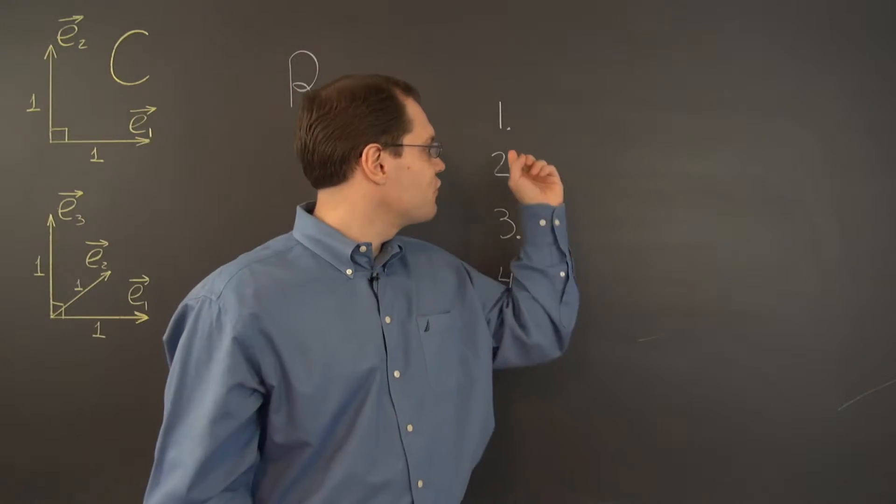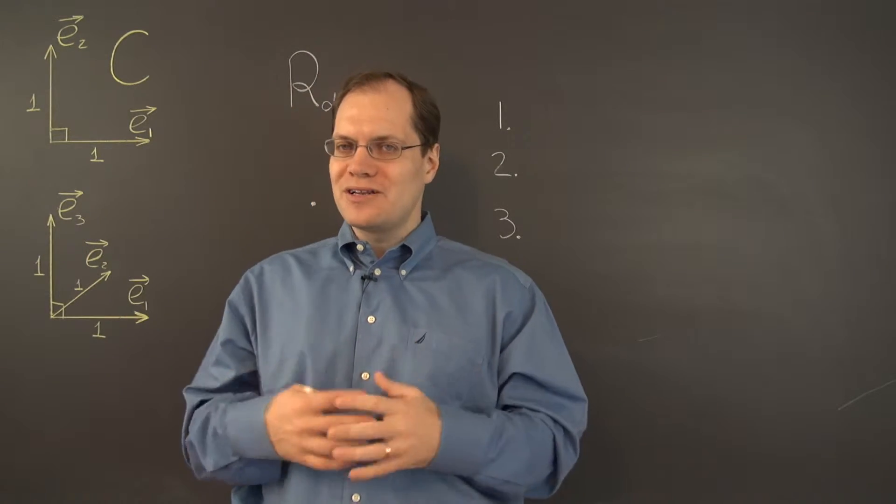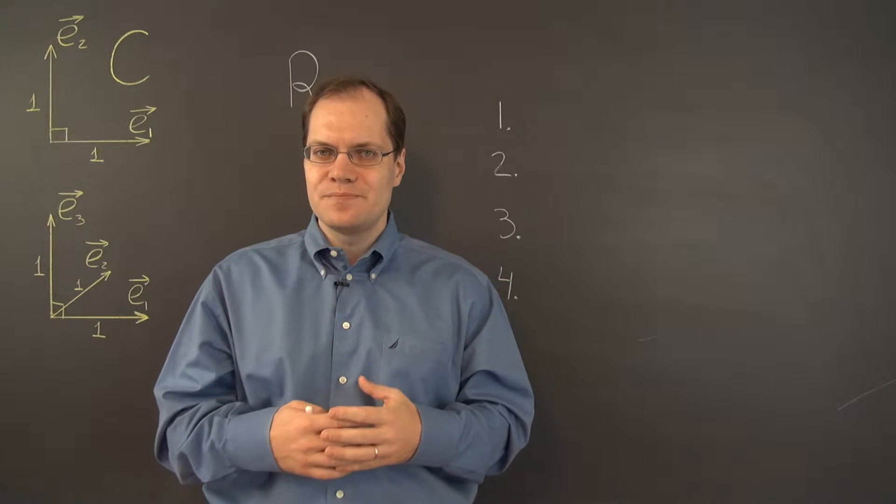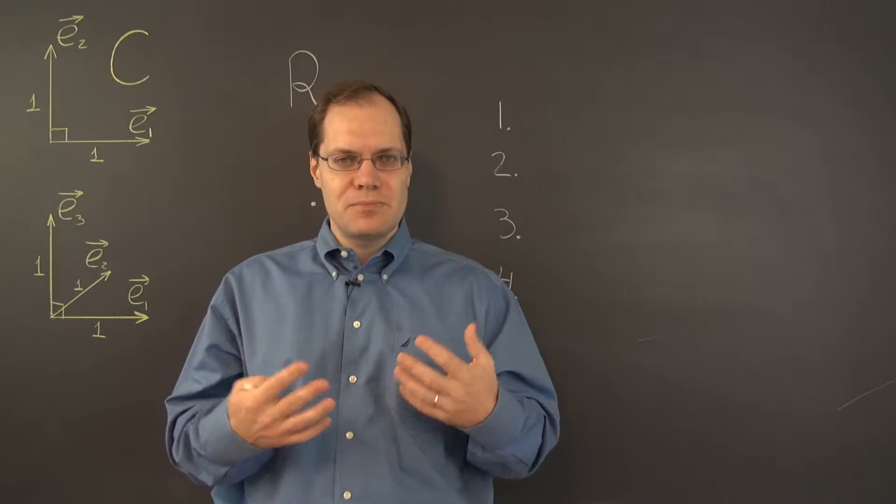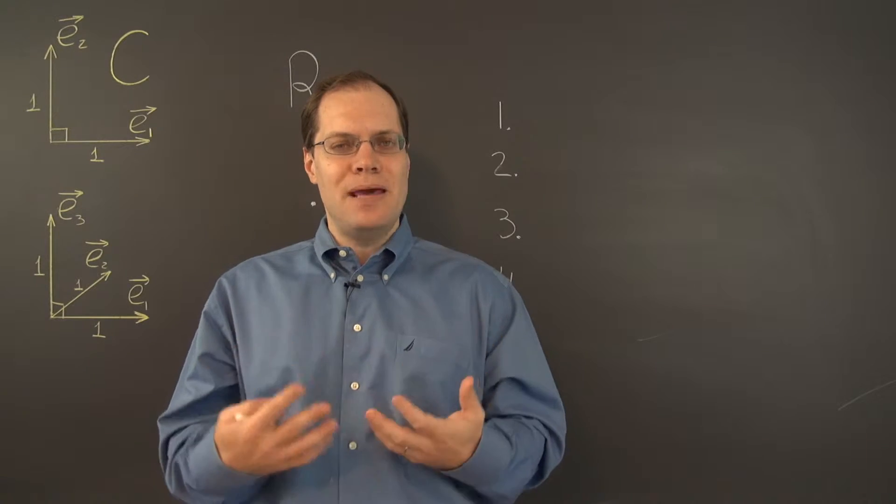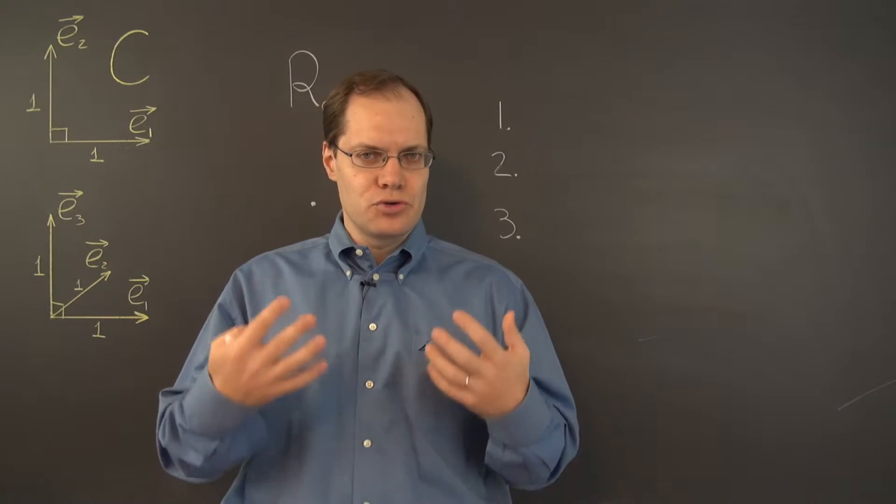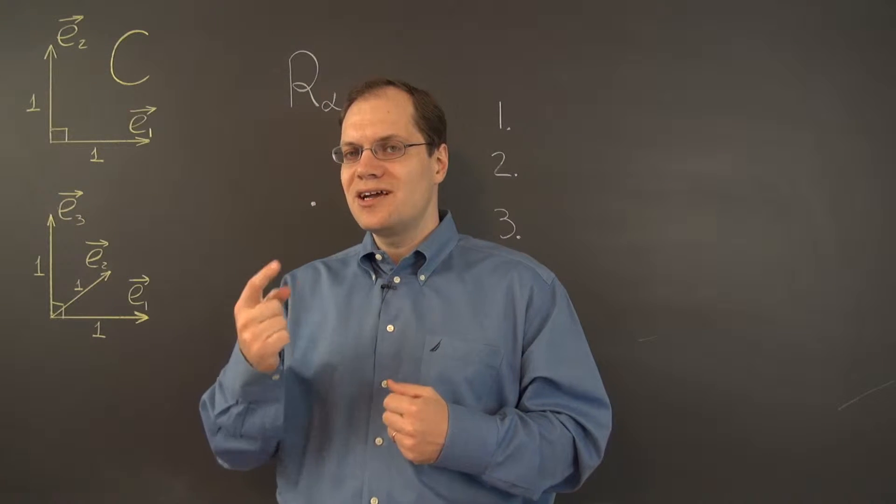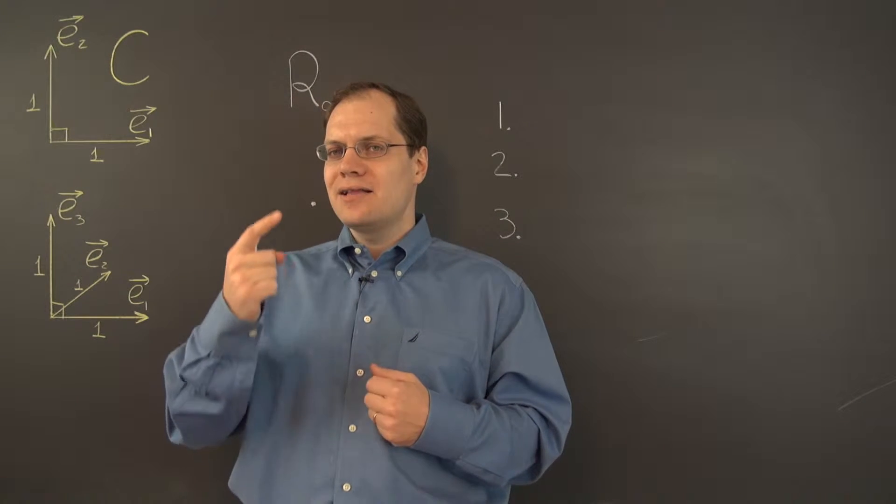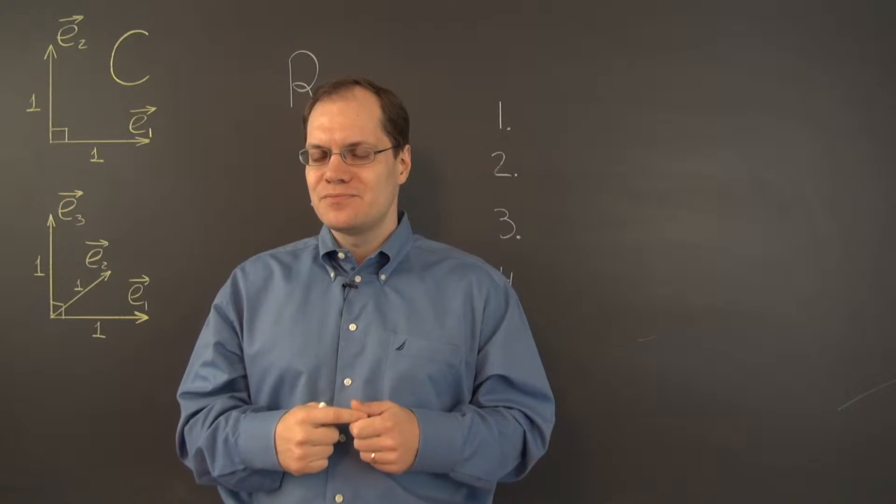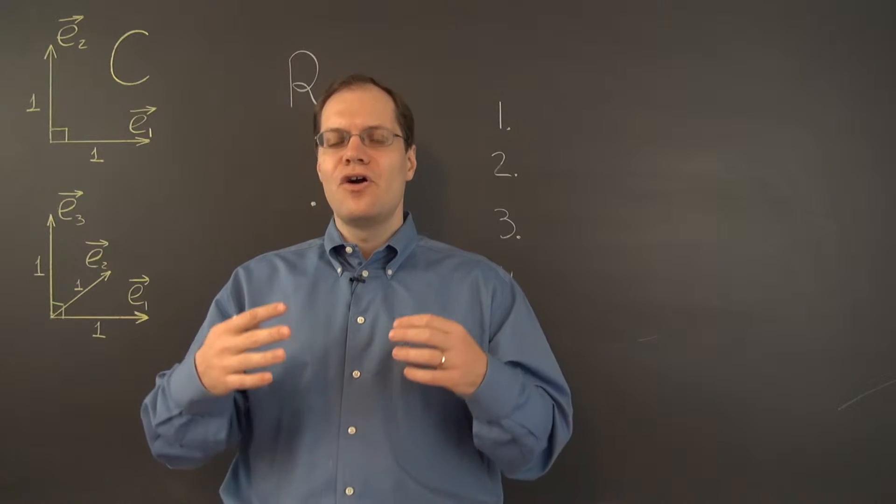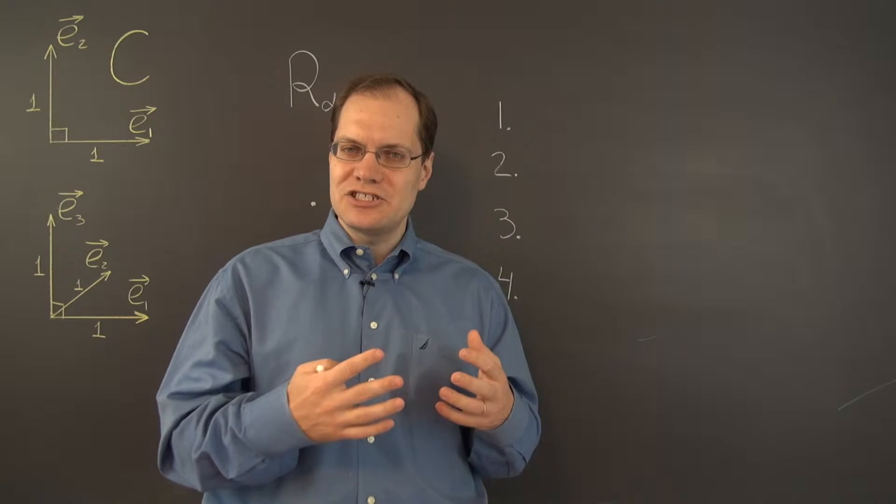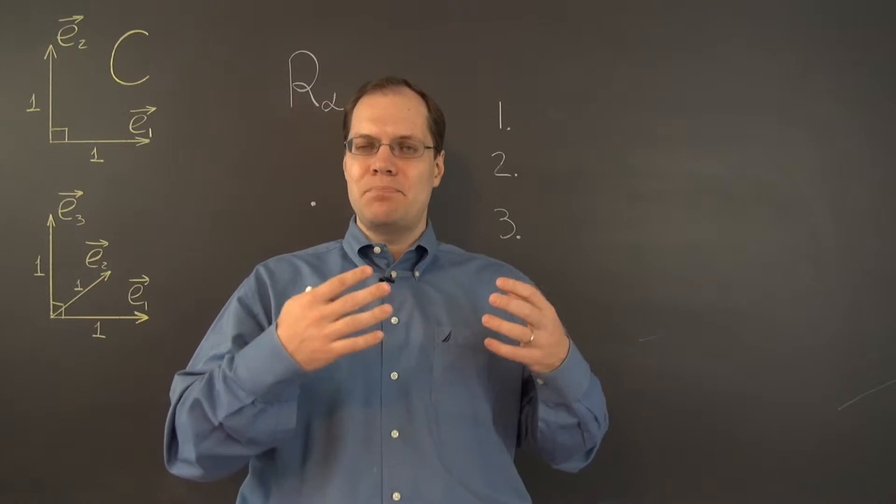So let's now talk about the first property, perhaps the most important of the four. And that is when you rotate by an angle alpha and then follow up that rotation by another rotation by the angle beta, what's the net effect of the two rotations? And of course, it's equivalent to a single rotation by the angle alpha plus beta.